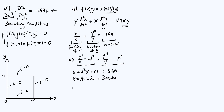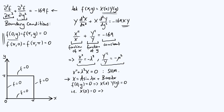Let's apply boundary conditions. Taking f(0, y) = 0, since f = X(x)·Y(y) this means X(0)·Y(y) = 0 for any value of y, so X(0) = 0. Plugging into our general solution: 0 = a·sin(0) + b·cos(0) = b·1, so b = 0. There is no cosine contribution.